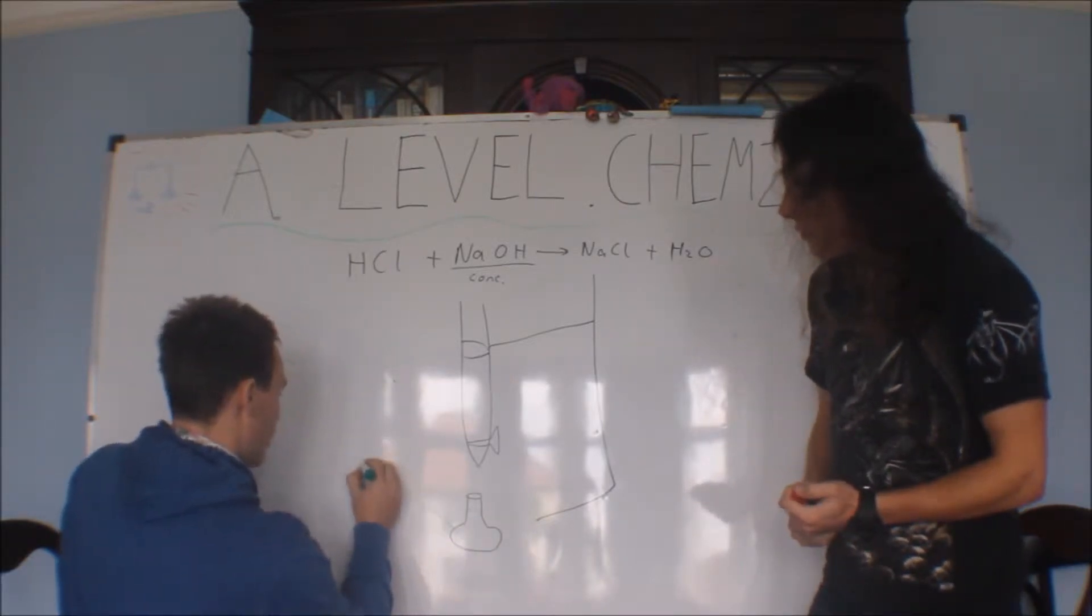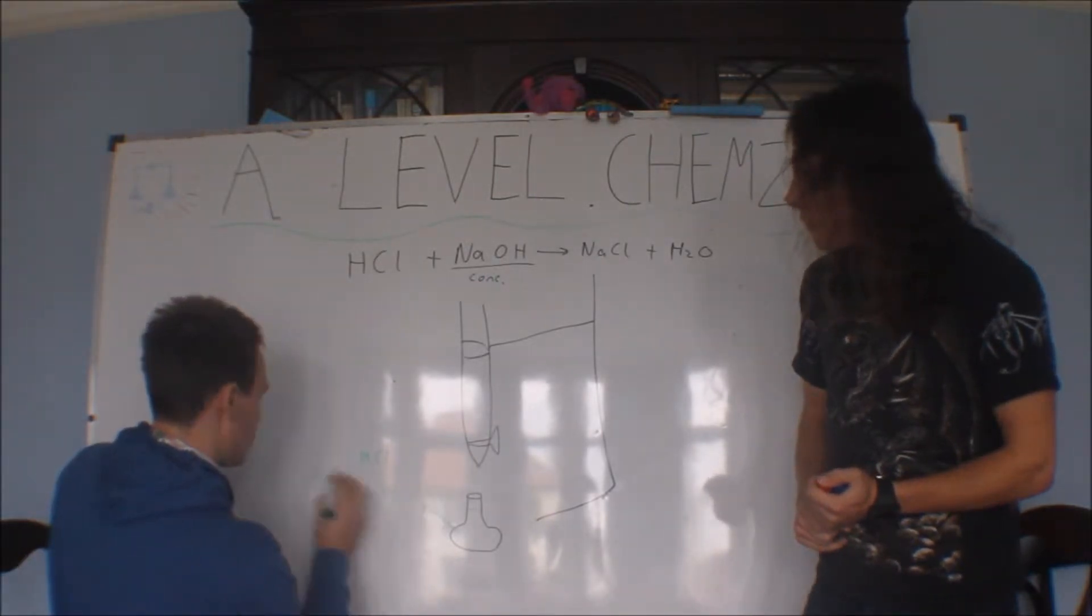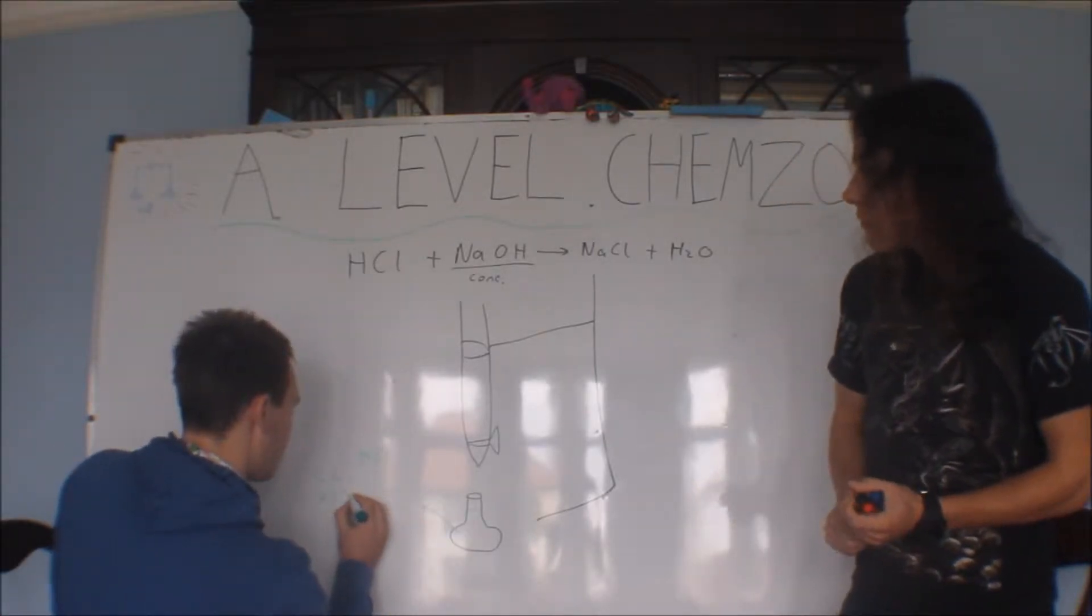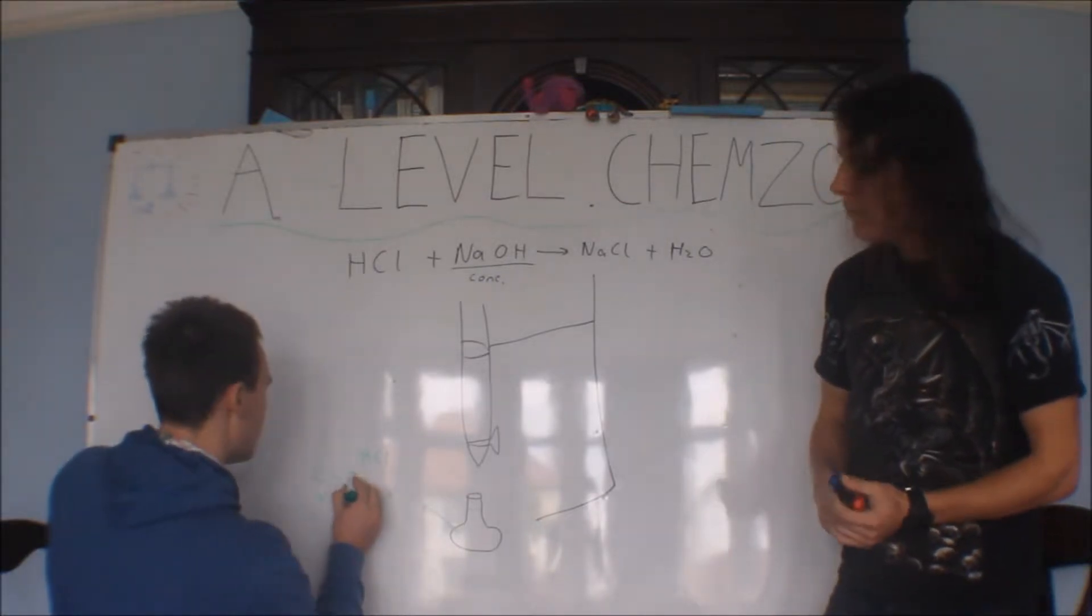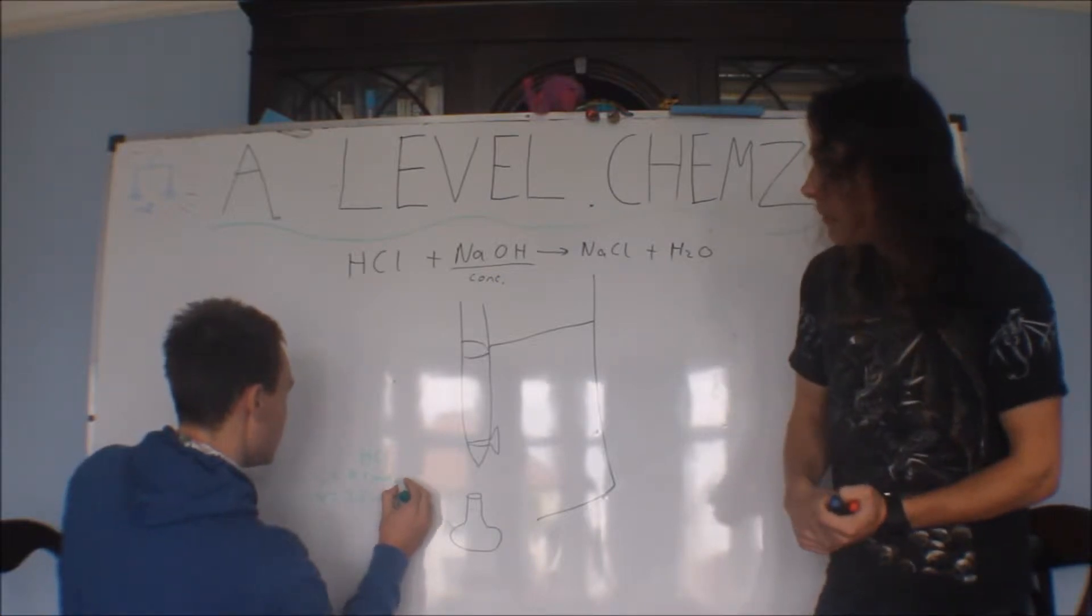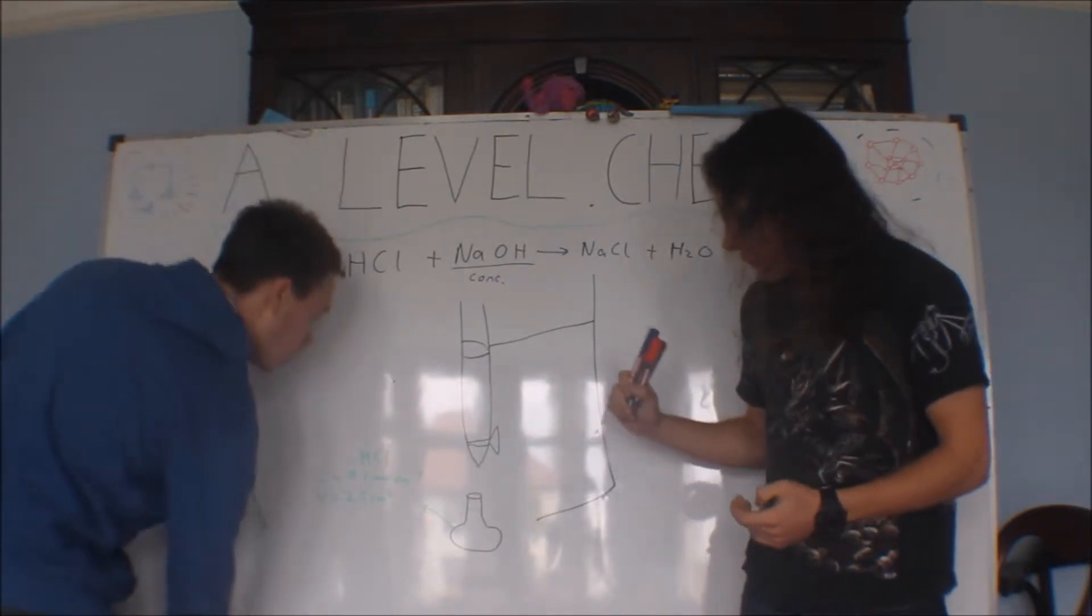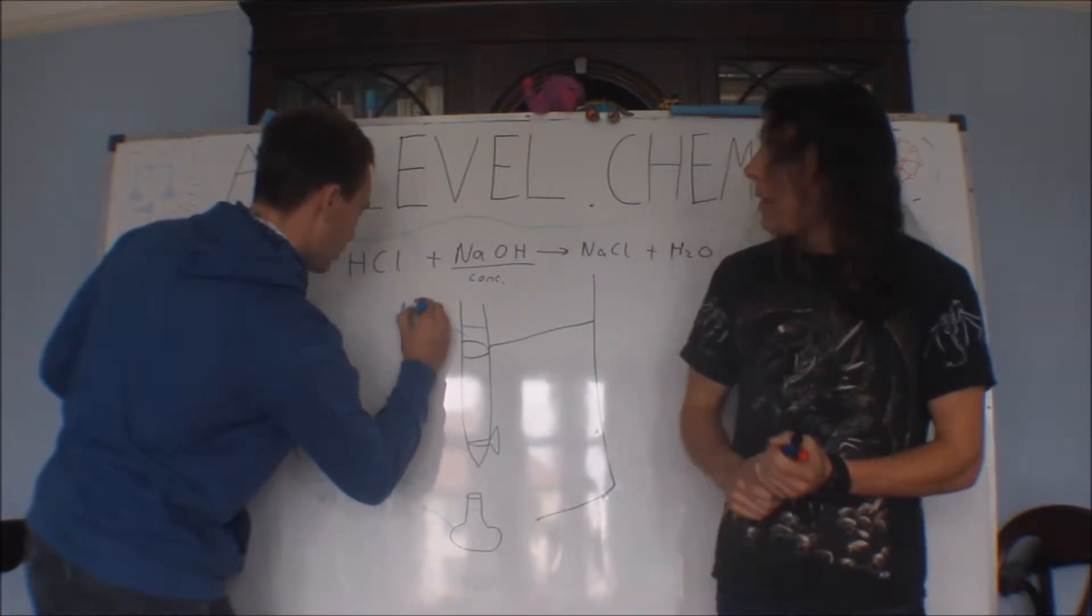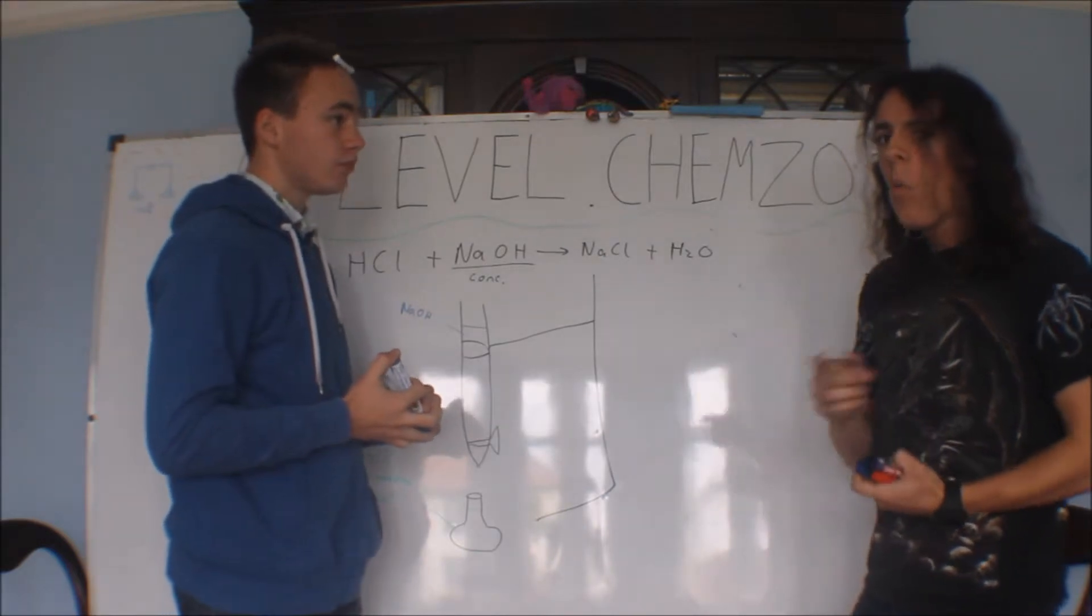And we're going to drop it into a conical flask which will have something of a known concentration in it. Say our hydrochloric acid, because we don't know the concentration of this. So in here you have a known volume. Normally these are 25 centimetres cubed flasks. And in there will be your hydrochloric acid. Now you know the concentration of this. You'll know the volume of this because it's 25 centimetres cubed.